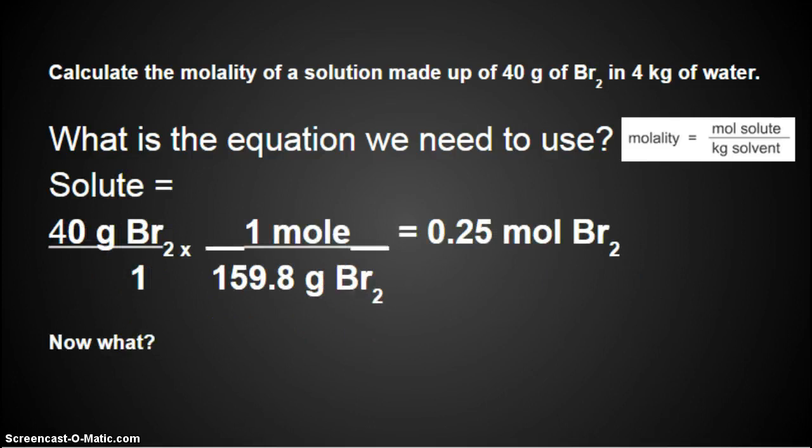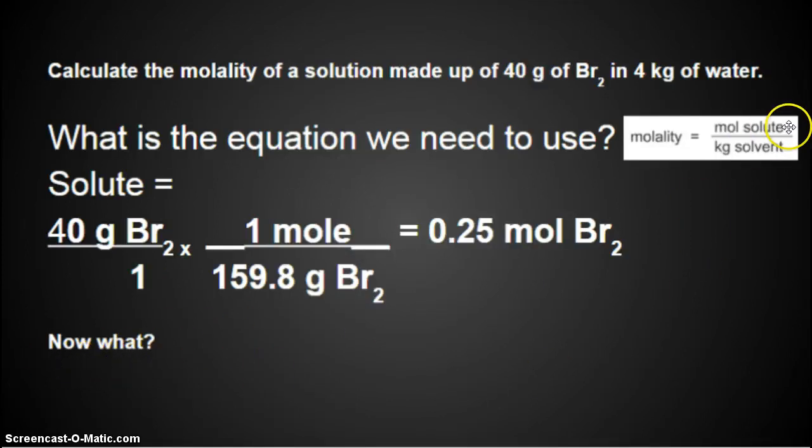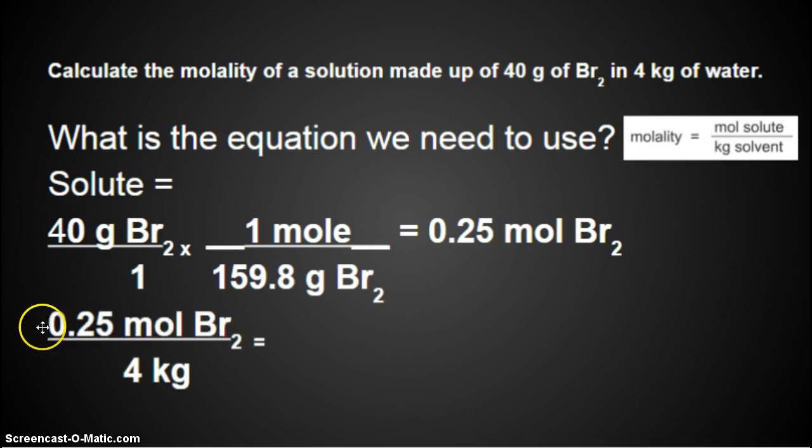Are we done? Nope, we are not done. We found the moles of solute. What do we need next? Kilograms of solvent. What chemical is our solvent? Our solvent is the water in this problem. And how many kilograms do we have? Four. So what are you going to put in your calculator? You're going to put in your moles of Br2. So 0.25 moles of Br2 divided by 4 kilograms.